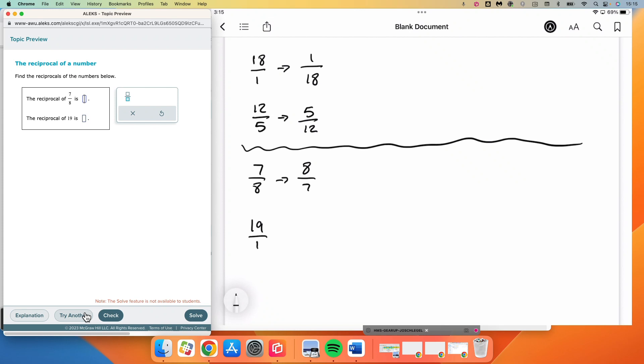To do that for 19, I have to recognize that that's 19 over 1. And then the reciprocal of that would be 1 in the numerator, 19 in the denominator. And so here, 1 over 19.